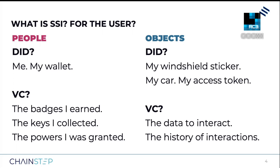Finally, there are the powers I was officially granted — permission to park in certain spots, ownership of a vehicle, permission to ride a bus or visit a concert. Another less known application of SSI is managing the ID of things. Here the DID can be linked to an ID token such as a windshield sticker identifying my car, or a portable access token that I can pass around freely. A VC here contains the data required for interactions — a car can provide its make, type of engine, state of battery, and the permission from its user to pay for recharging. Much as you don't need your bank to show proof of your financial data, the object no longer needs its owner to show proof of the powers it was granted. VCs can also store the history of interactions, much like badges, only for objects.